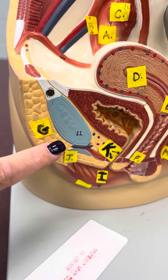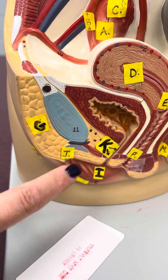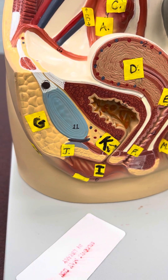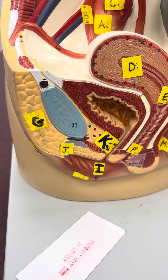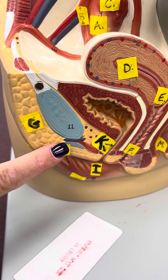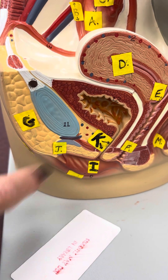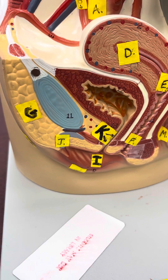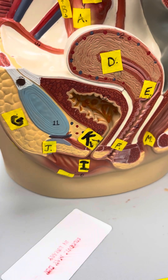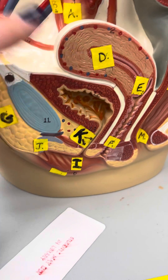J, right here, is the clitoris. It's going to be at the top, and it's a bundle of nerves.